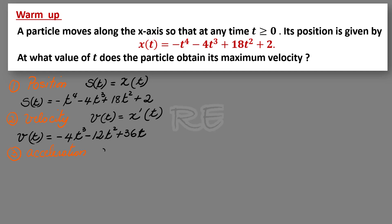The acceleration a of t is the derivative of the velocity, the rate of change of the velocity, which is the second derivative of the position function. A of t will be negative 12t squared minus 24t plus 36.